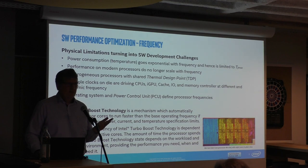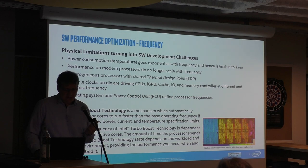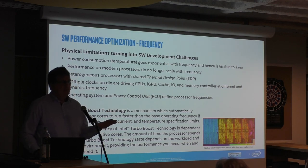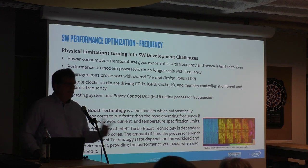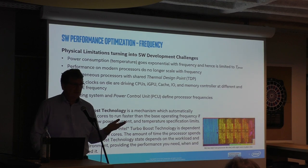When talking about frequency: in the old days we faced physical limitations when designing a microprocessor, and that is challenging as a software developer. Power consumption goes exponential with frequency, and exponential problems are hard to solve. Frequency is limited by TJ Max — the temperature of the die. If you go beyond 100 degrees, you're simply melting it. Performance on modern processors no longer scales with frequency. If you double the frequency, you will not double the performance at all.